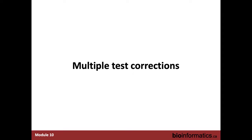Now we're going to go through multiple testing corrections, which is a tool everyone should use as long as they are conducting more than a handful of statistical tests. This is usually true whenever you are looking into genomics data or any type of omics data, because you have a lot of data and therefore need to be cautious about any single finding — since you have so many measurements.